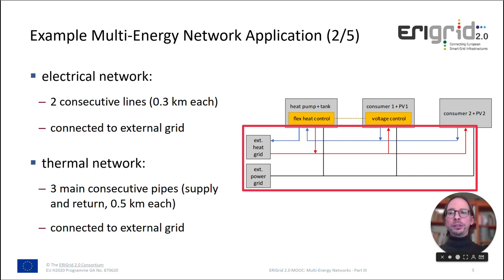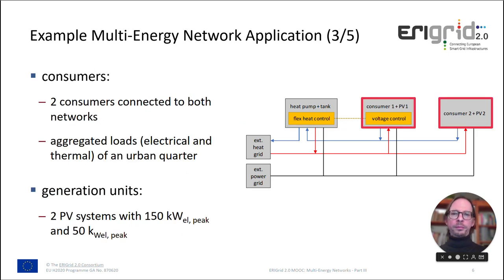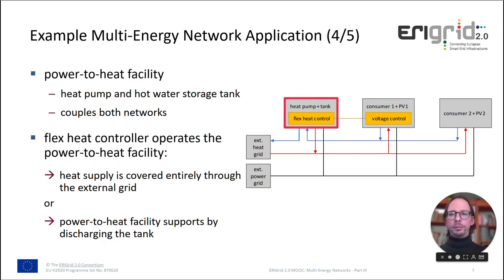We have an electrical network that constitutes two consecutive lines connected to an external electrical grid. We have a thermal network that comprises three main consecutive pipes, with supply and return lines each, also connected to an external thermal grid. There are two consumers, each connected to both networks, representing aggregated loads of an urban quarter. There are also PV systems for each consumer. The most interesting part is the power-to-heat facility, which comprises a heat pump and a hot water storage tank, and it couples both networks.